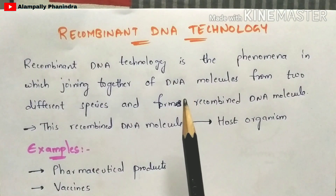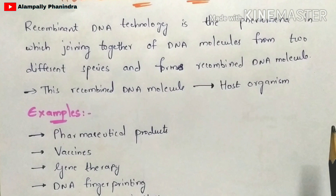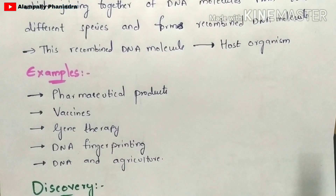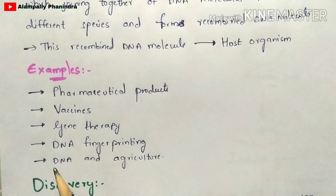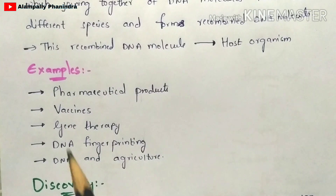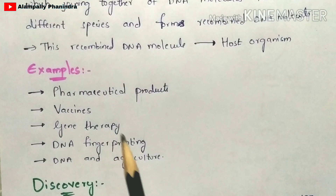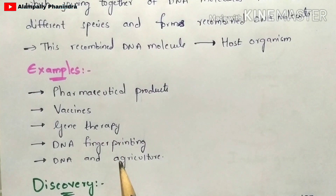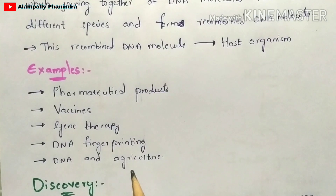Recombinant DNA technology is used in the preparation of pharmaceutical products, vaccines, gene therapy, DNA fingerprinting, and in agriculture. In the agriculture sector, this technology is very widely used — for example, for the preparation of BT cotton. In the next video, I'm going to show how BT cotton is prepared using recombinant DNA technology.